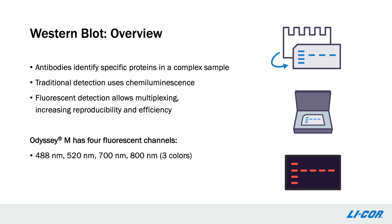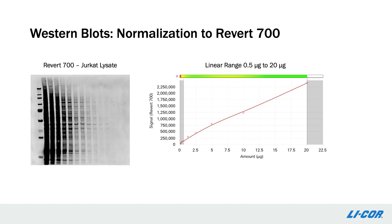Multiplexing increases reproducibility because you can normalize on the same blot that probes the target, and efficiency because fewer total blots need to be run to collect the same amount of data when multiple proteins are identified on each blot. Odyssey-M can image in four fluorescent channels. Because of spectral similarity between the 488 and 520 channels, only one should be used at a time, meaning that three targets can be imaged in a single blot. To assess differences in protein amounts across different samples in a meaningful way, the signal detected must be normalized to an internal control to correct for experimental variability.